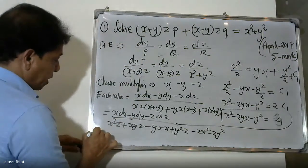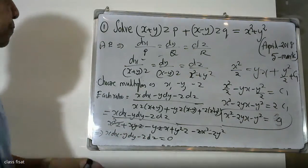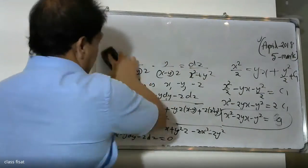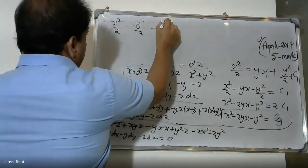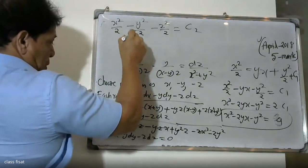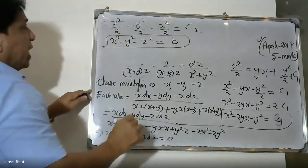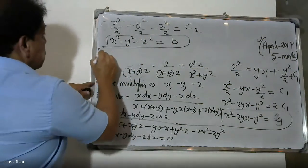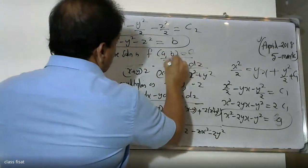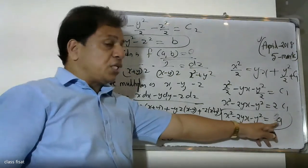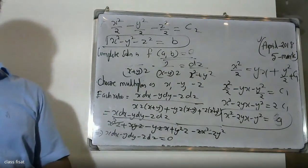Therefore it can be written as x·dx minus y·dy minus z·dz equals 0. Integrating: x²/2 minus y²/2 minus z²/2 equals 0, therefore x²-y²-z² equals 2c₂. The second constant b: x²-y²-z² = b. Therefore the complete solution is f(a, b) = 0, where a = x²-2yx-y² and b = x²-y²-z². The final answer is f(a, b) = 0.